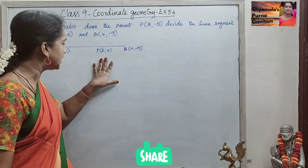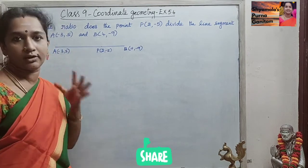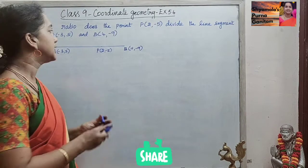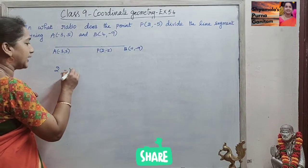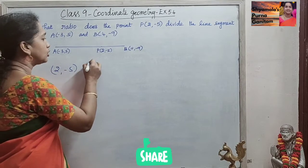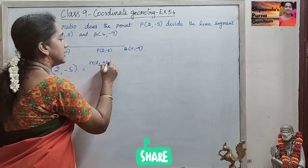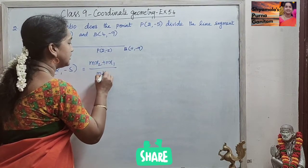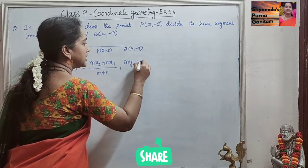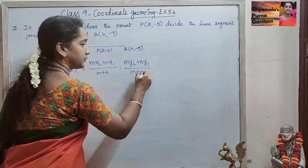We are asked to find in what ratio P is dividing the line segment. So we will use the section formula: (2, -5) is equal to (m·x2 + n·x1) / (m + n), and same way (m·y2 + n·y1) / (m + n).